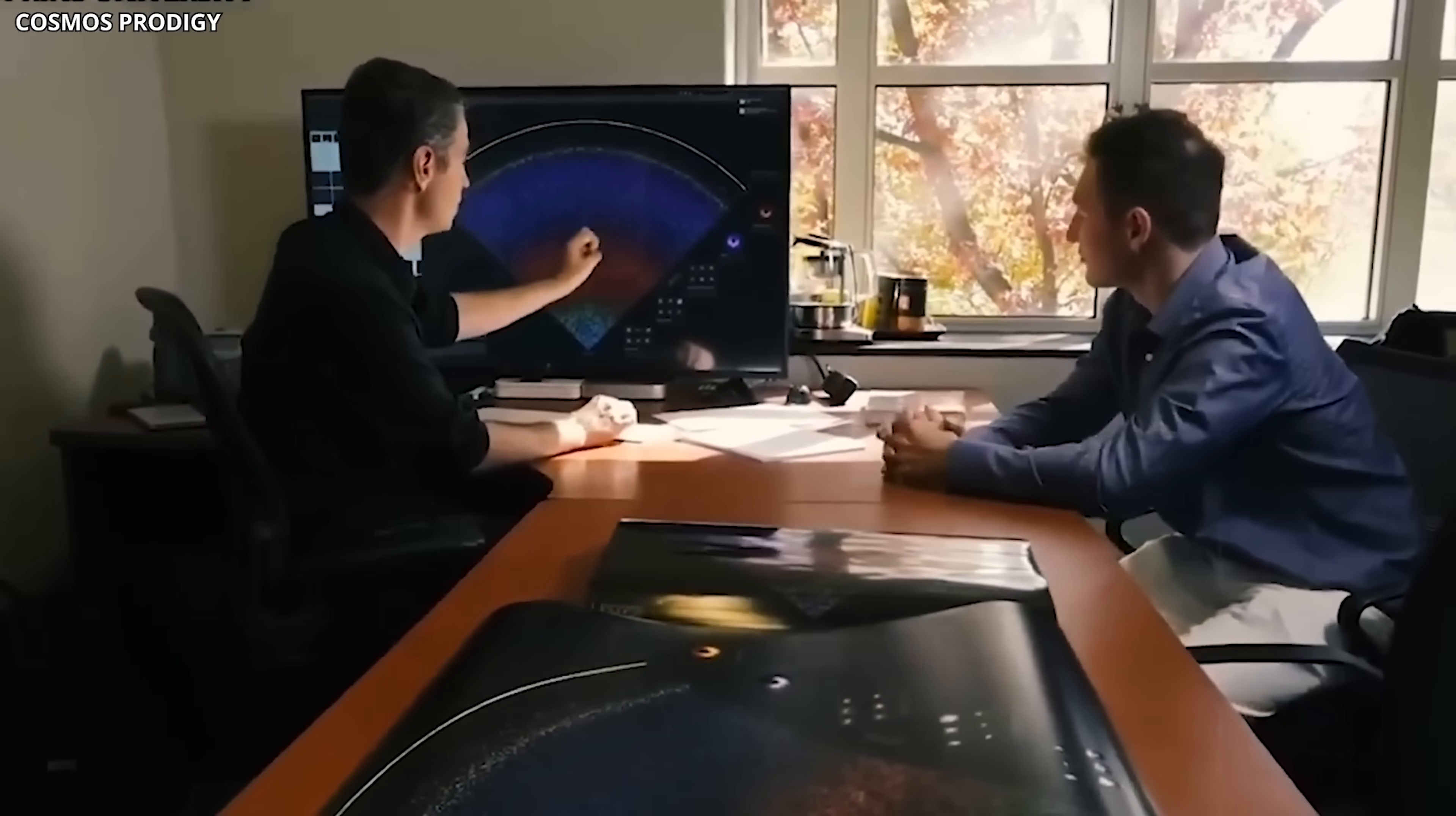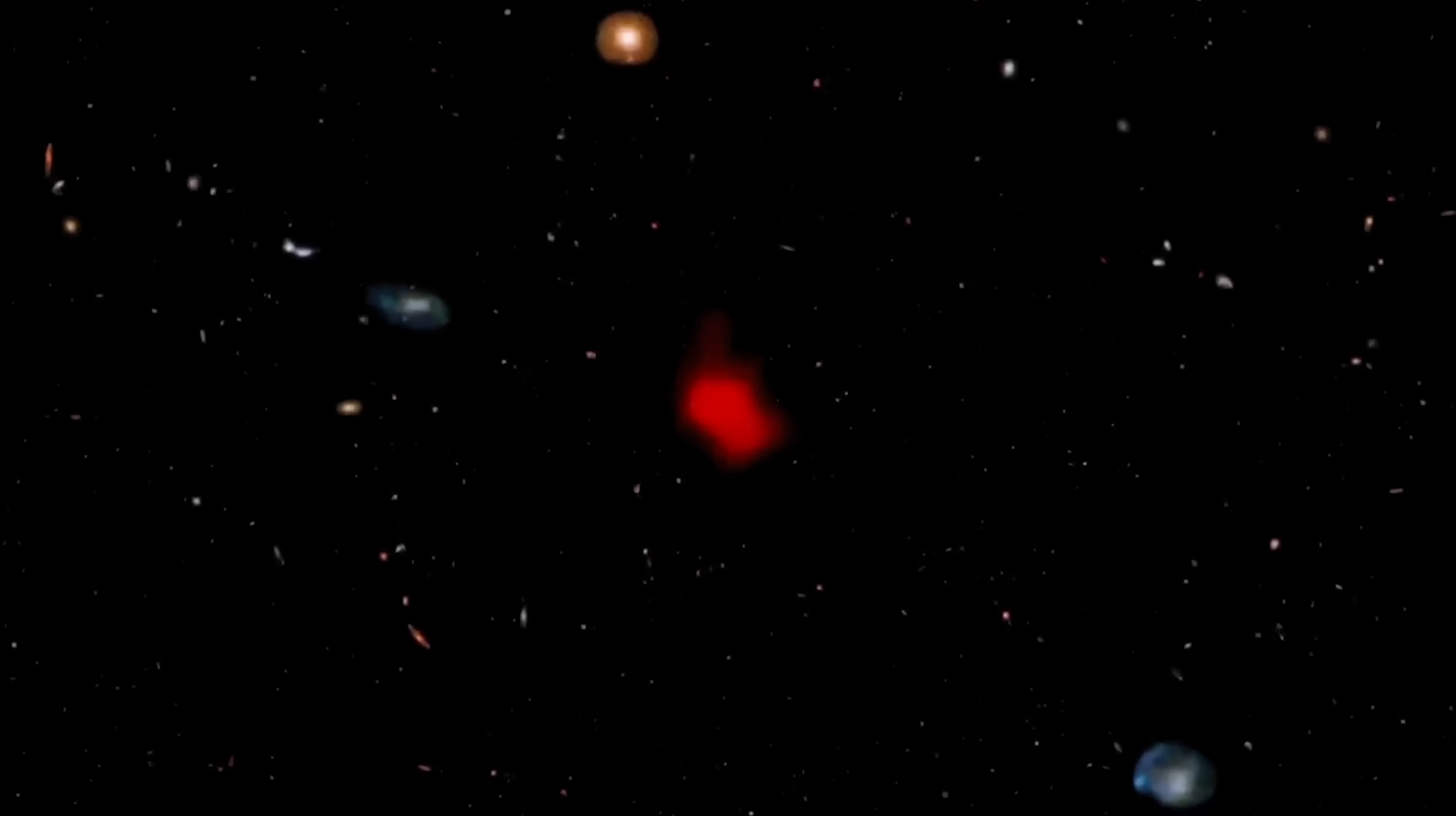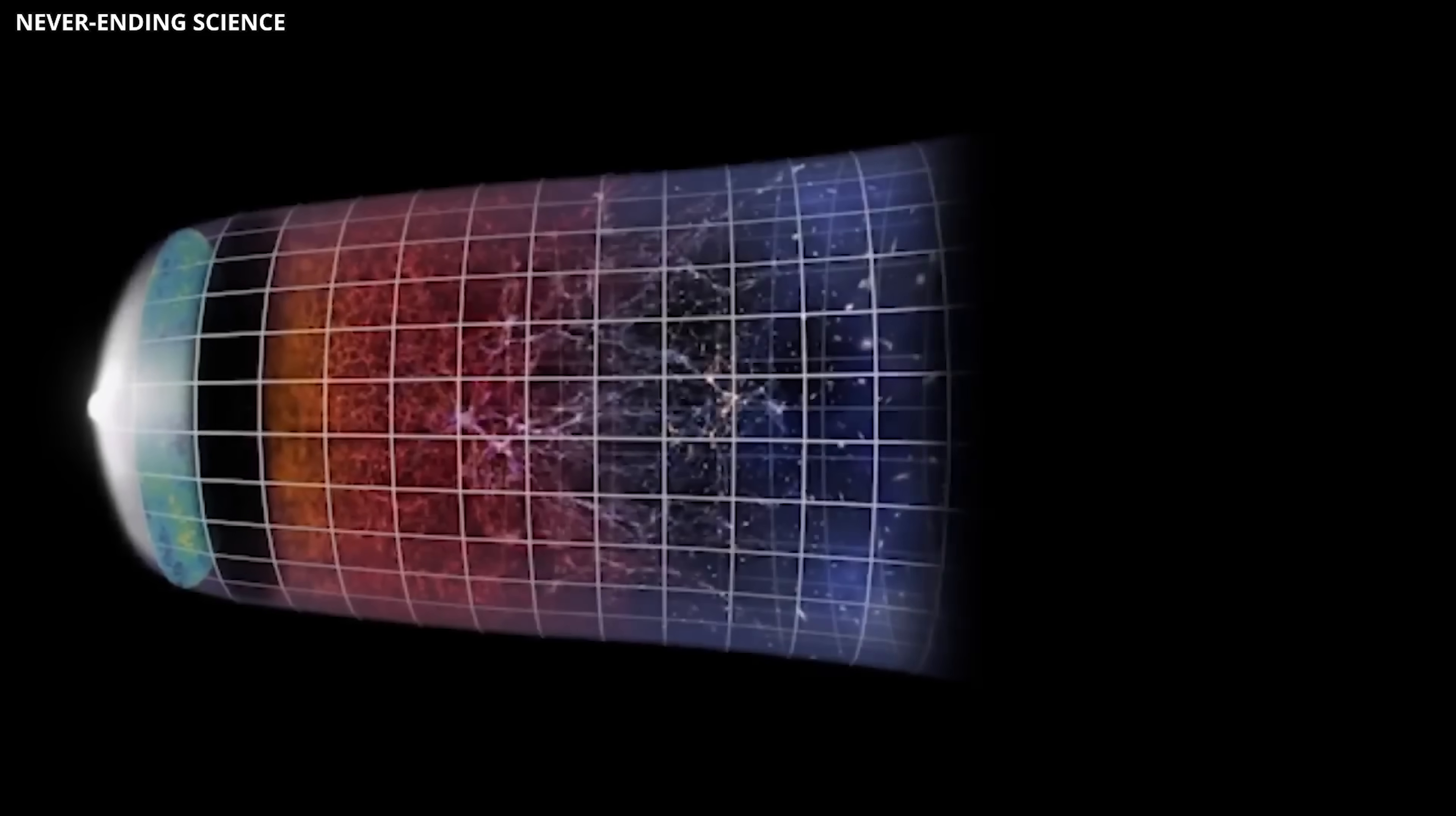Just when researchers thought the findings couldn't become more perplexing, yet another surprise emerged. CEERS 2112 adds another layer of complexity to our understanding of galaxy formation. This barred spiral galaxy, while not as ancient as GNZ 11 or JADES z13, is situated at a redshift of 3, making it a near equivalent of our Milky Way in structure. CEERS 2112 is estimated to have been approximately 2 billion years old when it emitted the light we observe today. The stellar mass is estimated to be around 3.9 billion solar masses. This substantial mass suggests it was in a relatively advanced state of development when the universe was still in its infancy.